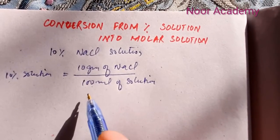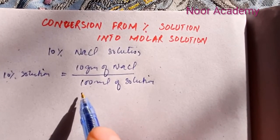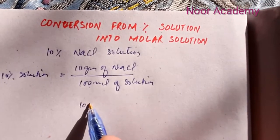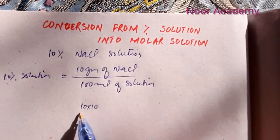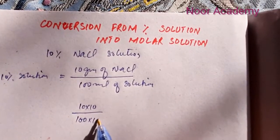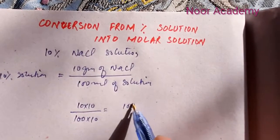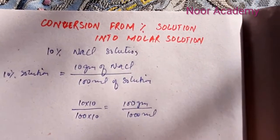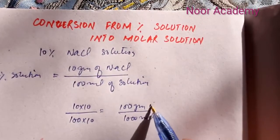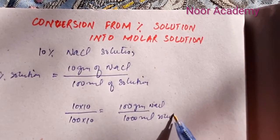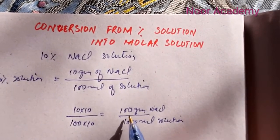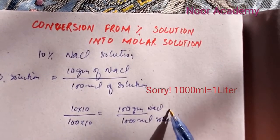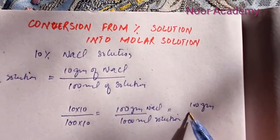So when we multiply the numerator, we would get 10 multiply with 10 divided by 100 multiply by 10. This would equal to 100 grams divided by 1000 ml. 100 grams of NaCl, and this is solution. Now you know 1000 ml is equal to one liter, so we can also write it as 100 grams over one liter of solution.